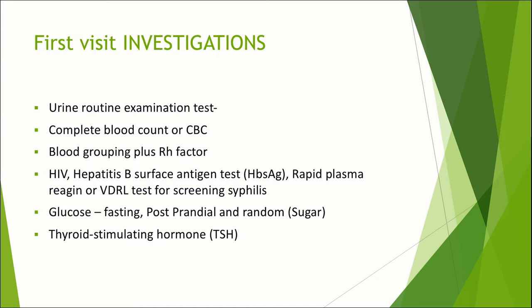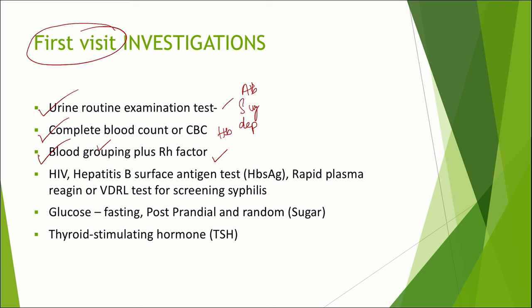What are all the investigations required at the first visit of an antenatal mother? We conduct urine routine examination which includes urine albumin, sugar, and deposits. Next is complete blood count where our focus will be on hemoglobin. Next is blood grouping and Rh typing — this is for arranging blood and also anticipating Rh incompatibility inducing neonatal jaundice. Routinely we do HIV, Hepatitis B (HBsAg), and RPR or VDRL test for screening syphilis. Then we conduct glucose fasting, postprandial, and random for detection of gestational diabetes mellitus. Recently, thyroid stimulating hormone (TSH) has also been included in the investigations needed for antenatal mothers at their first visit.